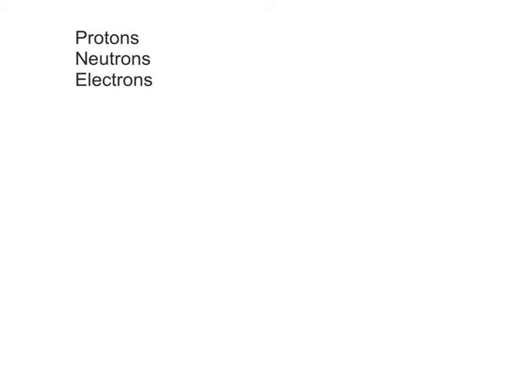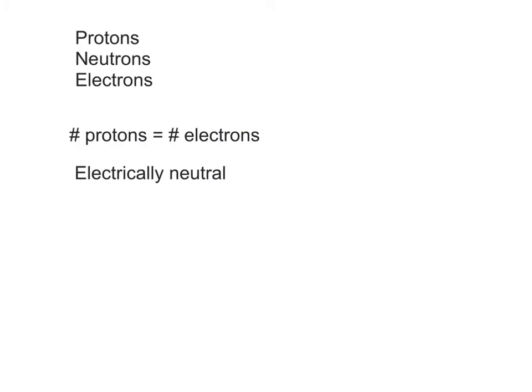As we know, atoms contain three subatomic particles called protons, neutrons, and electrons. Remember that atoms have the same number of positively charged protons and negatively charged electrons, and because of this are electrically neutral, meaning that they do not have a net charge. When atoms interact with other atoms in chemical reactions,